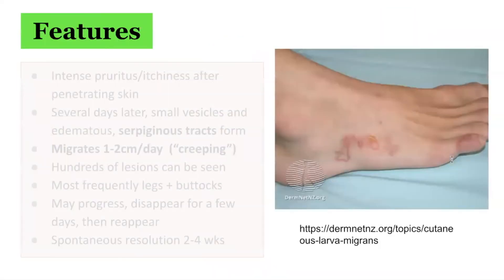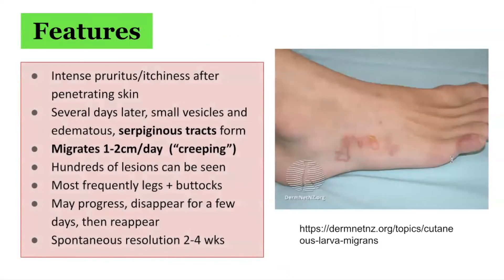In terms of the clinical features, patients with cutaneous larva migrans have intense localised pruritus that begins shortly after the hookworm penetrates the skin. Several days later, the pruritus can be accompanied by small vesicles and one or more edematous serpiginous tracks. Serpiginous means the pattern is curvy in a snake-like formation. Each larva produces one tract and migrates at a rate of 1–2 centimetres per day, which is referred to as a creeping eruption.